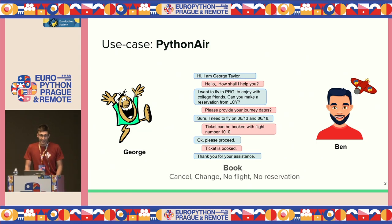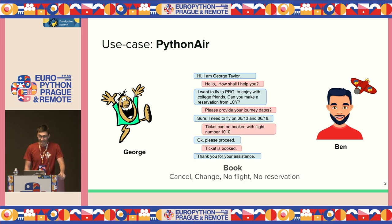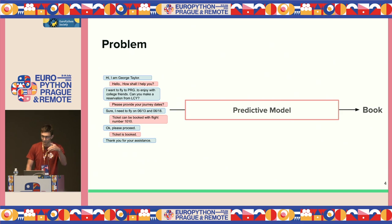Ben can do four other actions apart from booking. He can also cancel the flight, change the flight, or indicate there is no such flight or no such action. Because Python Air is a data-driven company, they would like to automatically track these actions — essentially build a predictive model that will say what action Ben has done, given the conversation.